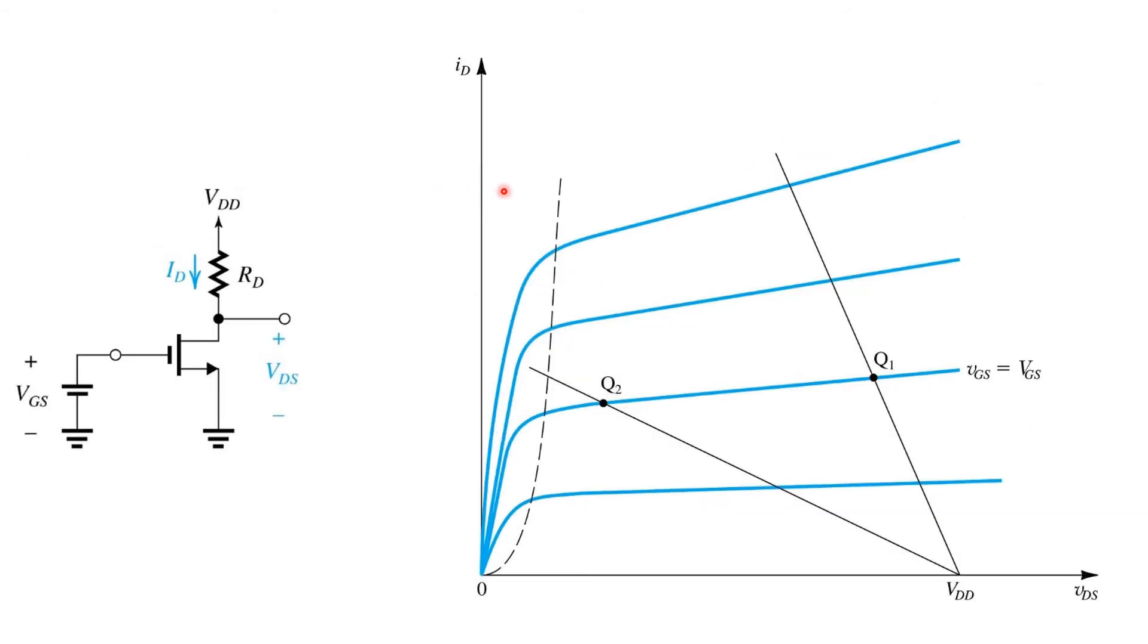Now that we understand this plot, you can think about the design of this transistor amplifier graphically. Once the transistor is selected, the threshold voltage and value of KN are determined, and so the shape of these blue plots is determined. At that point, the designer has to make a couple of choices.